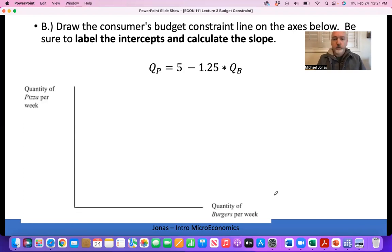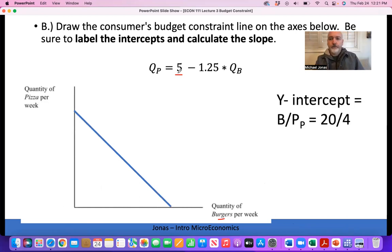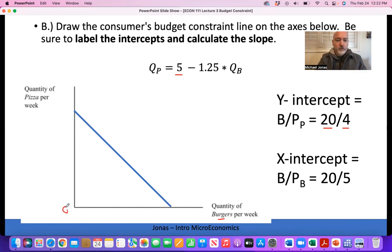Starting with our equation, we've already got half the battle won. The Y intercept is 5 - when quantity of burgers is 0, quantity of pizza will be 5. That's budget over price. The X intercept is the budget over the price of burgers. If pizza was 0, we used all $20 to consume burgers. How many units could we buy? 20 over 5, or 4.